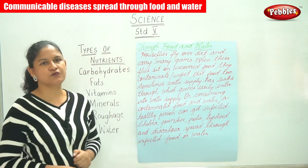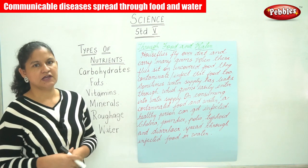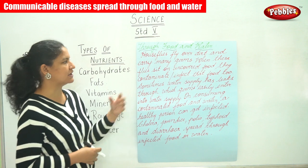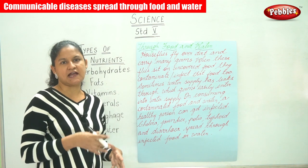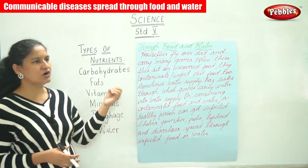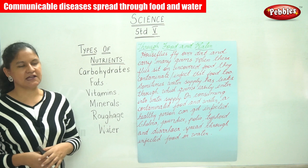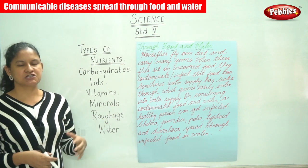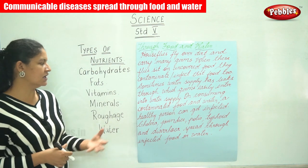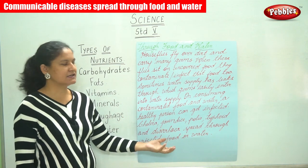Disease can also spread through insects. House flies fly over dirt and carry germs, and when these flies sit on uncovered food they contaminate or infect that food. Sometimes the water supply has leaks through which germs easily enter, and on consuming contaminated food and water a healthy person can get infected.